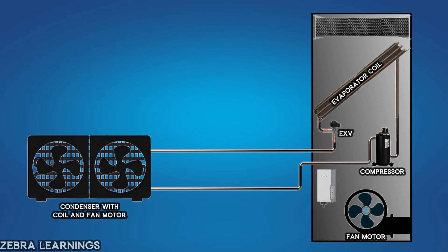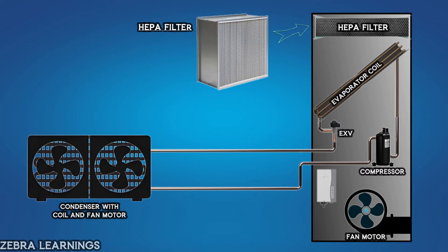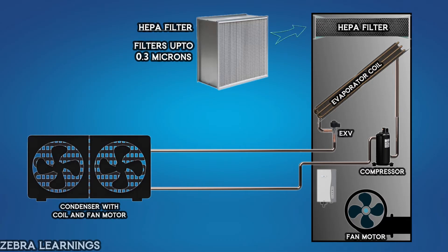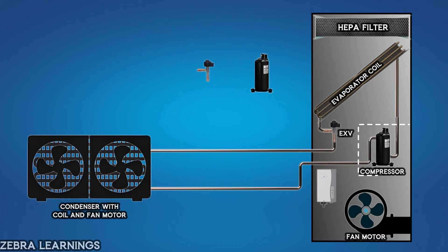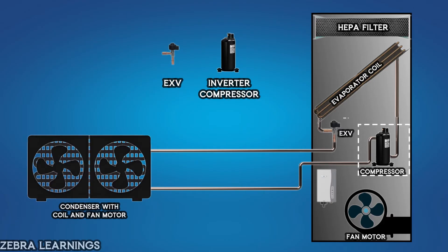In PACs, high-quality filters like HEPA filters are used. These filters can trap particles as small as 0.3 microns in size, ensuring that high-quality air is supplied to the data center. The use of an inverter compressor and electronic expansion valve allows for very precise control of the room temperature.